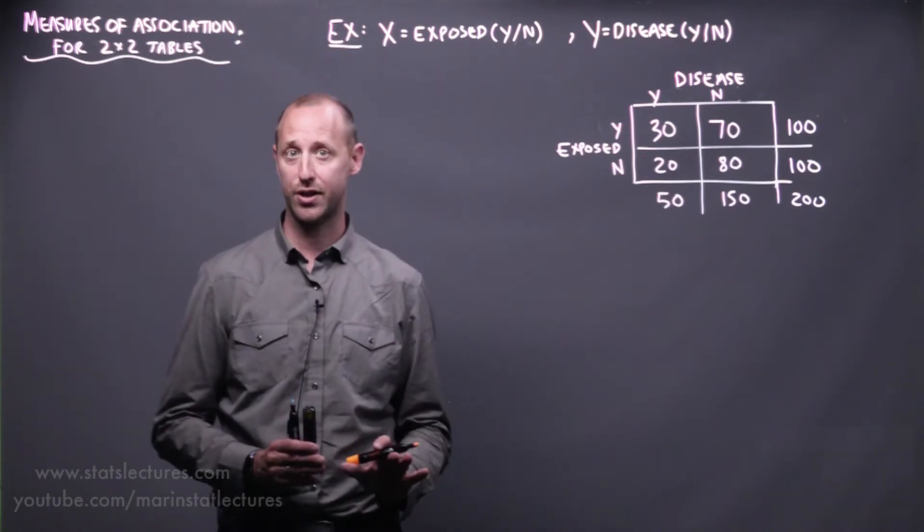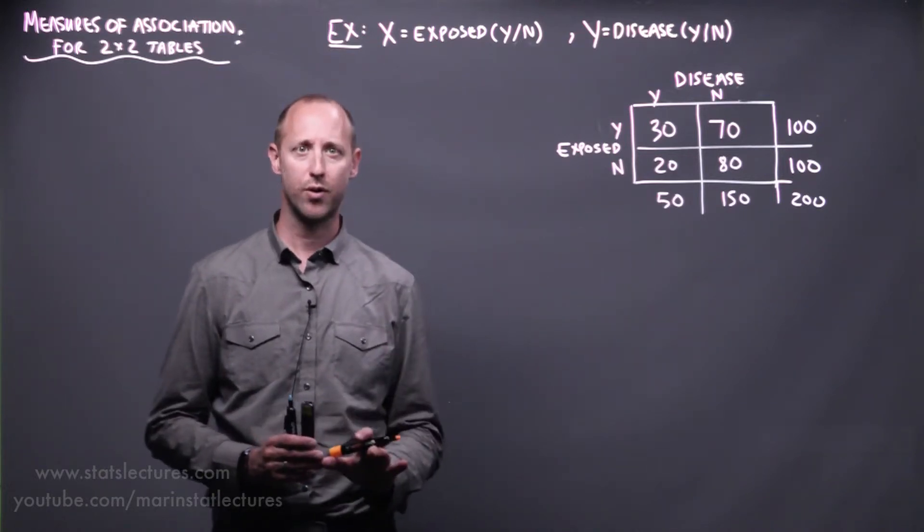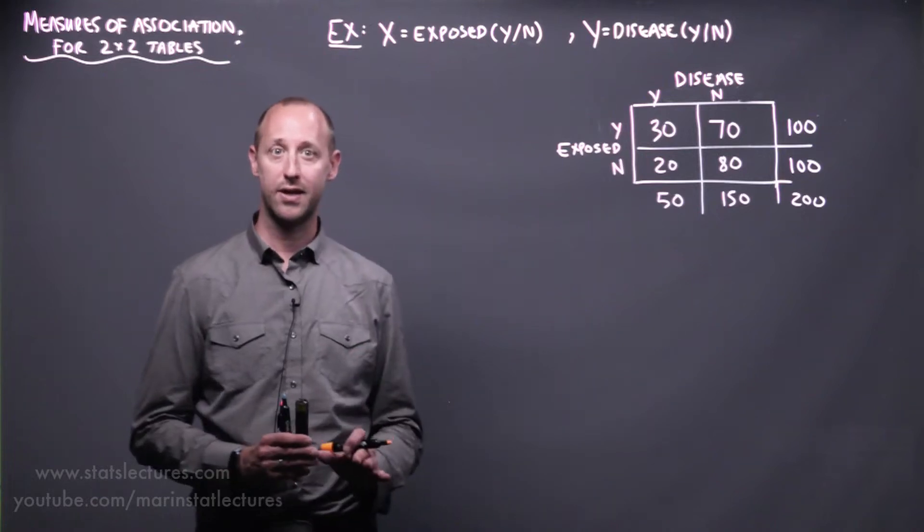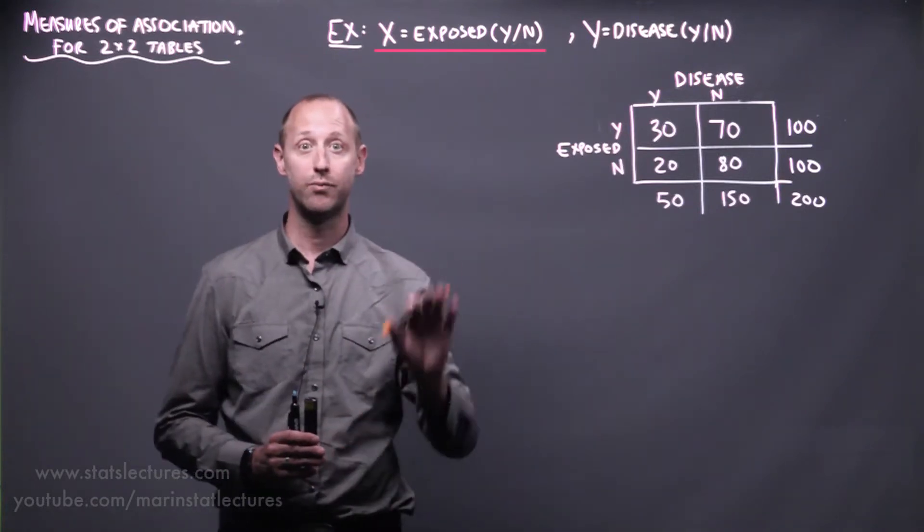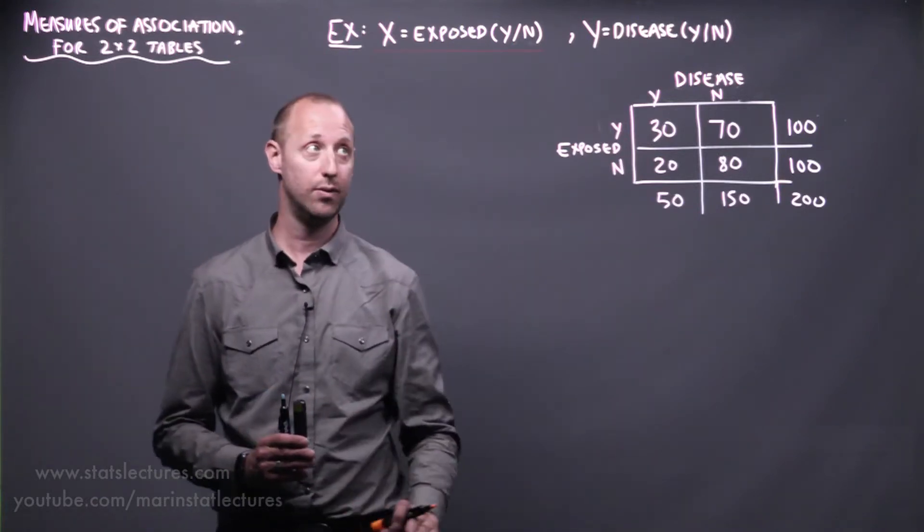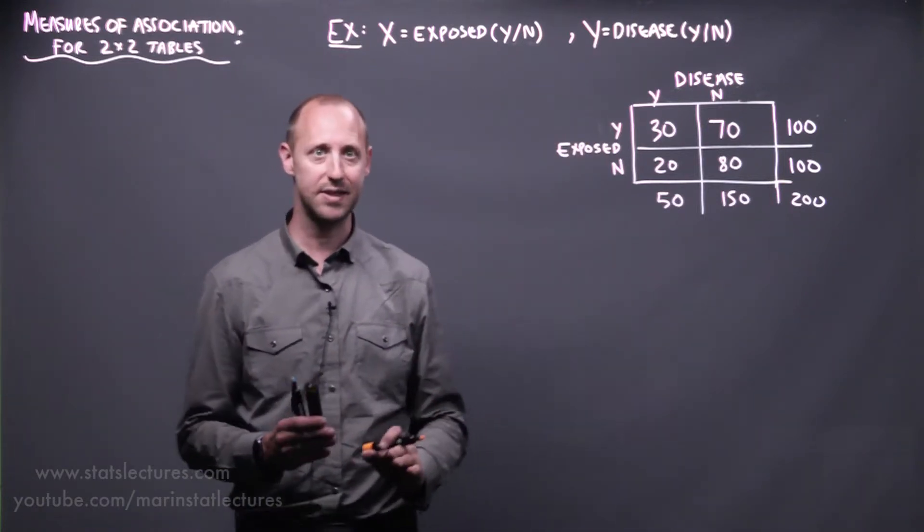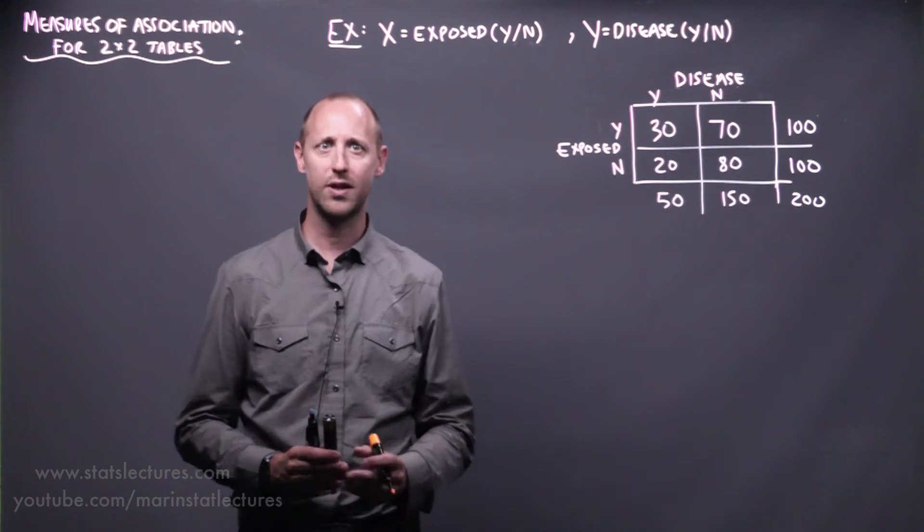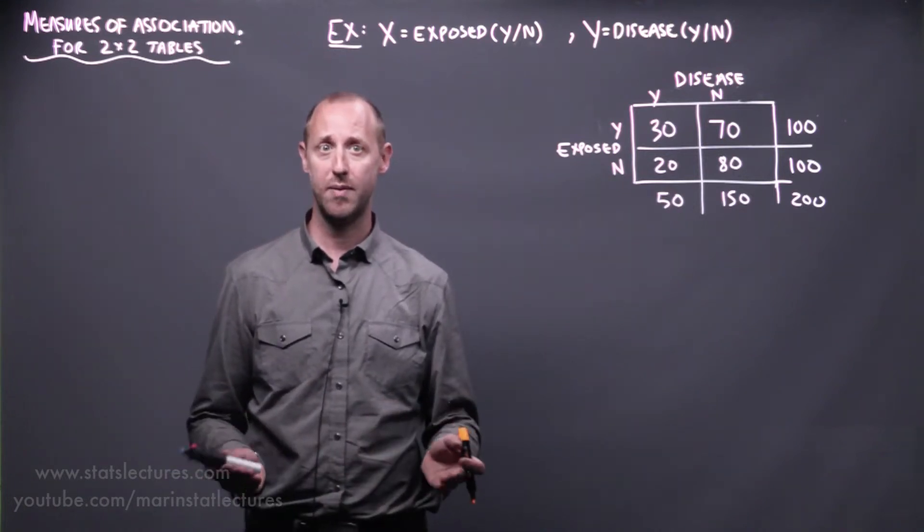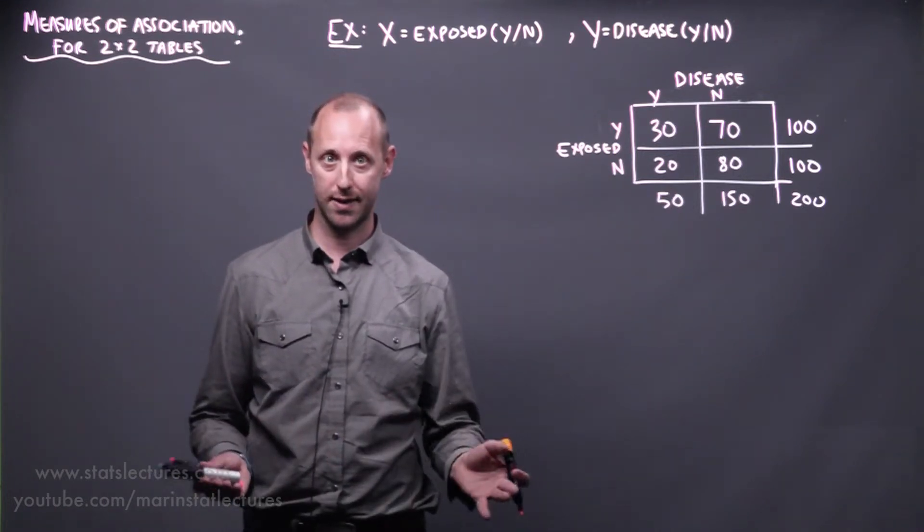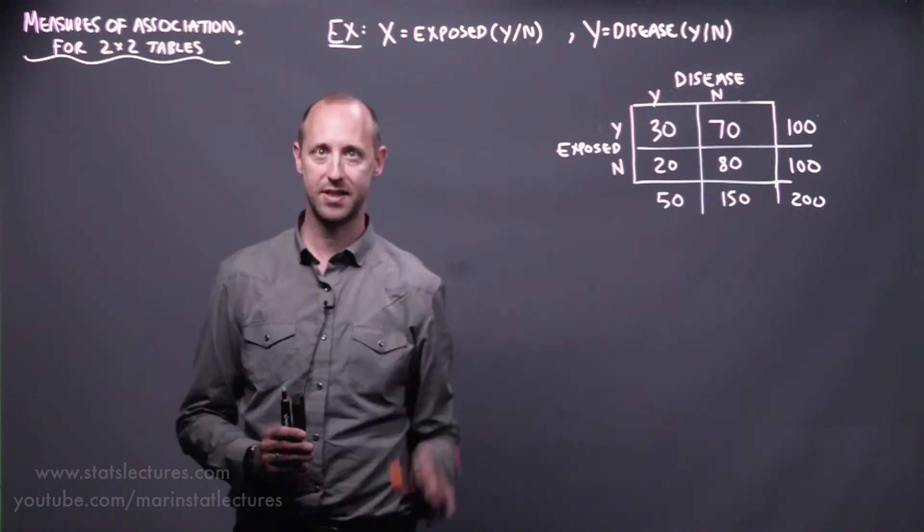I've used generic terminology. So often when working through two-by-two table analysis, the terms that get used are for the x variable, we refer to that as exposed, yes or no, and for the y variable, disease, yes or no. It doesn't need to be exposure and disease. We can look at things like, are you male or female, and are you left-handed or right-handed? But the generic terminology is exposed and diseased.